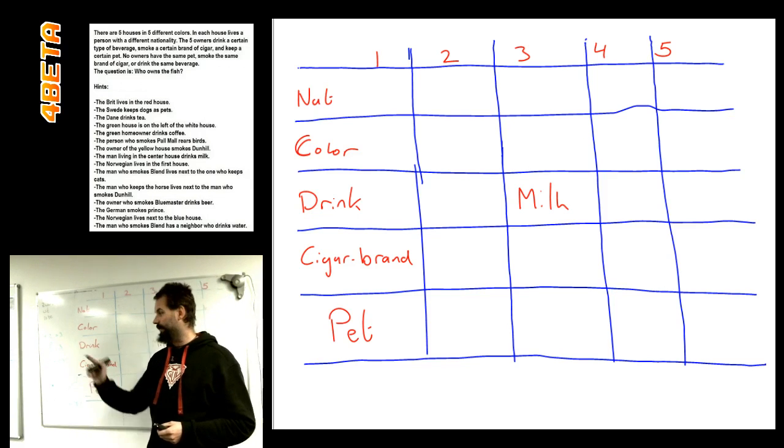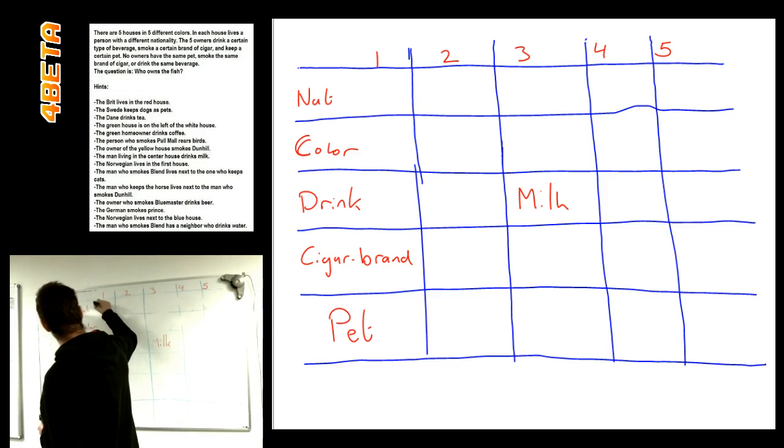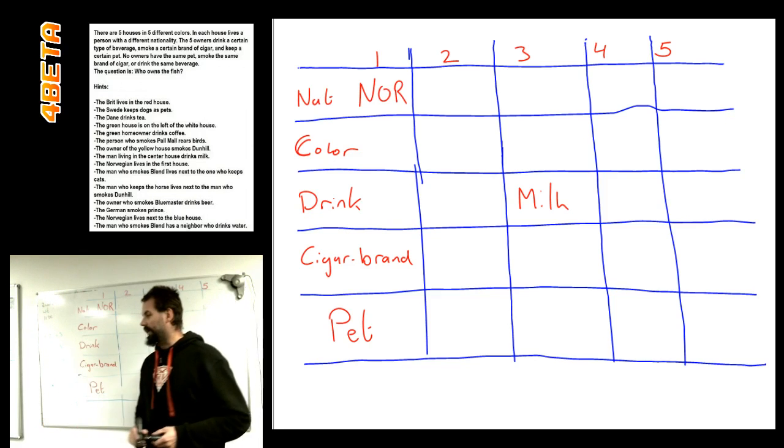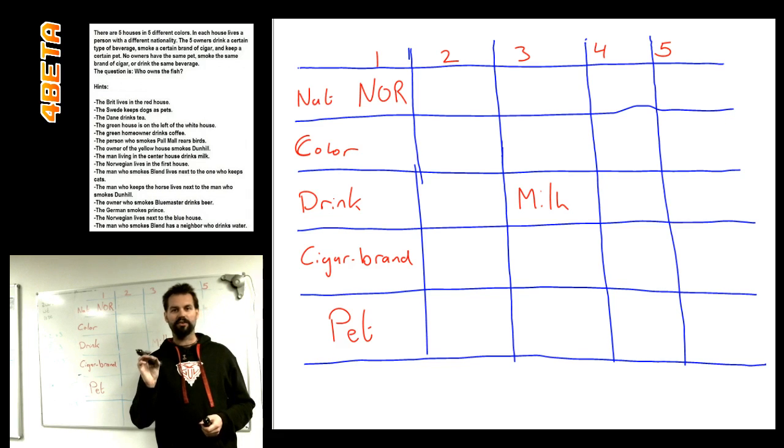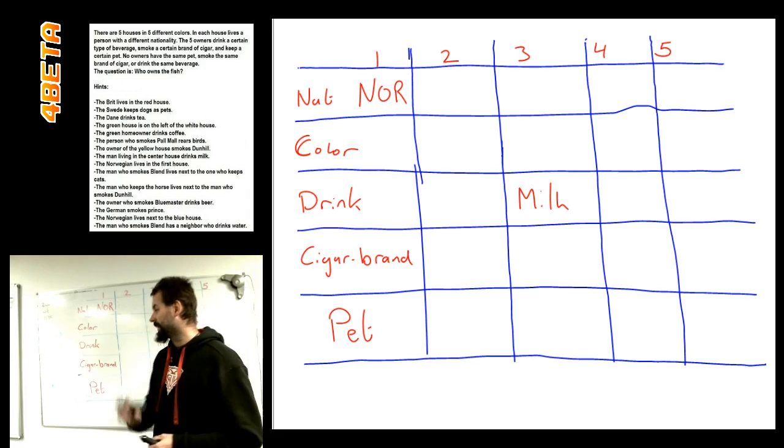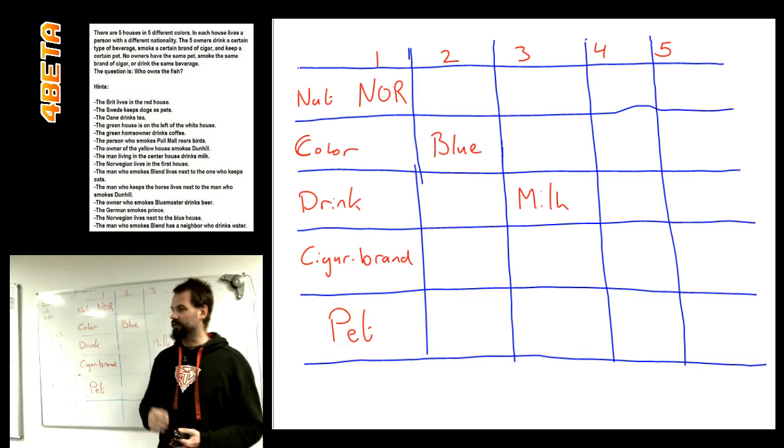Furthermore, we have the Norwegian guy is in house number one. And we also get that next door to the Norwegian guy, we have a blue house. So that's the first part.